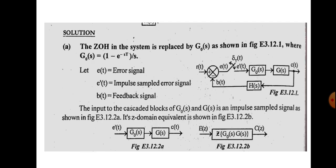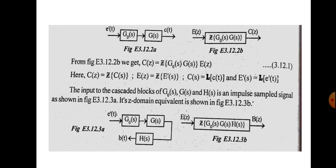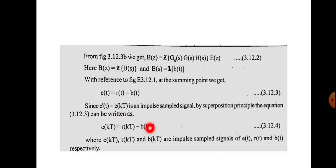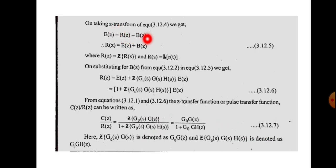We also have the error signal equation: e(t) = r(t) - b(t). Taking the sampled version: e(kT) = r(kT) - b(kT). Since e(kT), r(kT), and b(kT) are impulse-sampled signals of e(t), r(t), and b(t) respectively, we can directly take the Z-transform: E(z) = R(z) - B(z).